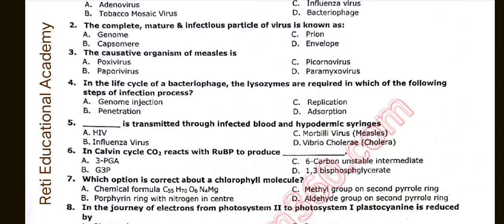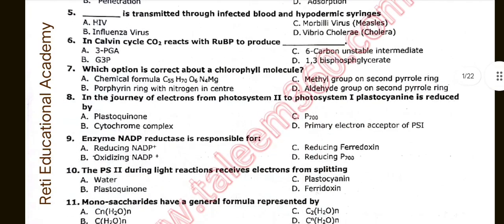Question number five: Dash is transmitted through infected blood and hypodermic syringes. The correct option is A: HIV. HIV is transmitted through infected blood and hypodermic syringes. Question number six: In the Calvin cycle, CO2 reacts with RuBP to produce dash. The correct option is C: Six carbon unstable intermediate.